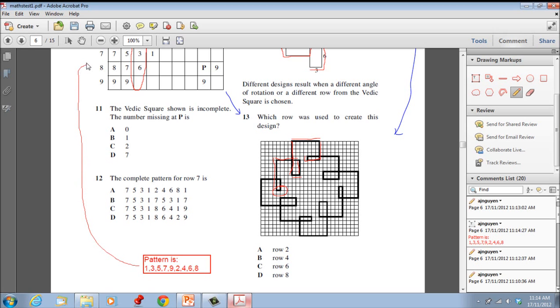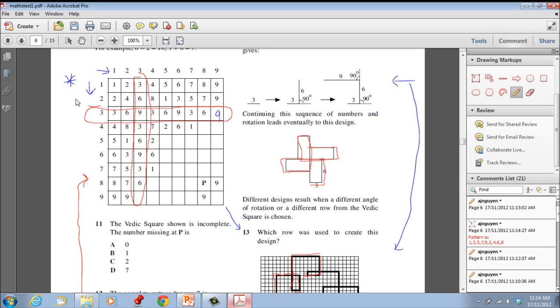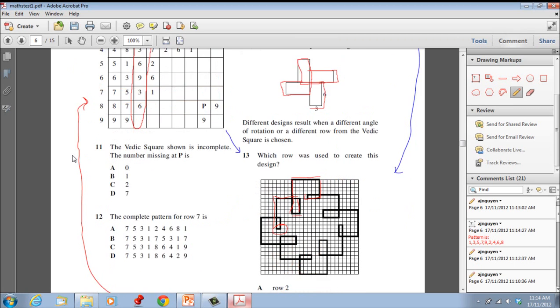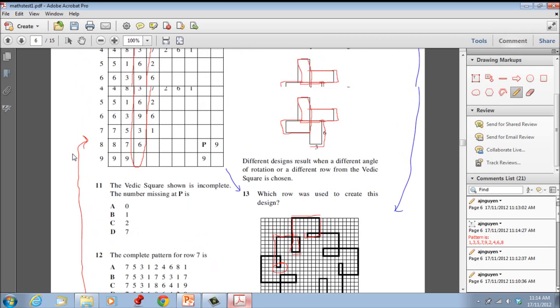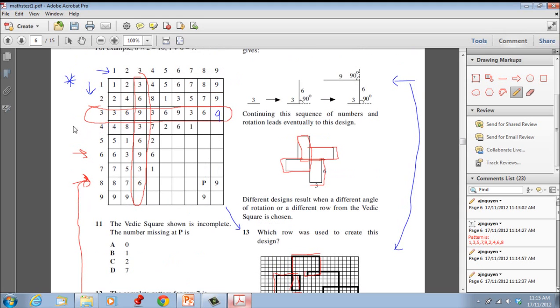So where is it here? All you have to do - does row 2? We'll go through the options they presented: 2, 4, 6, 8. Go through row 8. What's the pattern there? 8, 7, 6. No, it's not that. 6, 3, 9, 6, 3. That's not the right pattern because that doesn't exist in ours. Row 4 is 4, 8, 3, 7, 2, 6, 1. No.